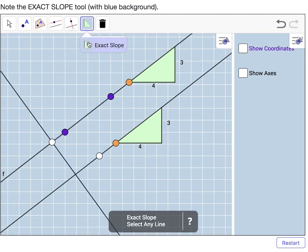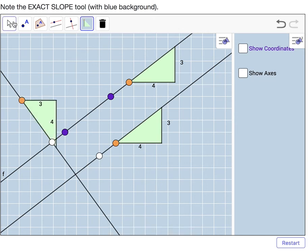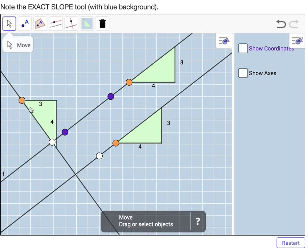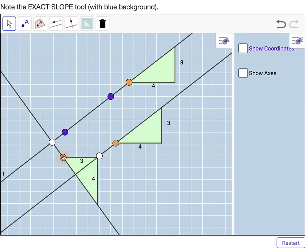Here we go, and we'll check out the slope here. In this case, negative four-thirds. And you can drag this anywhere you'd like.